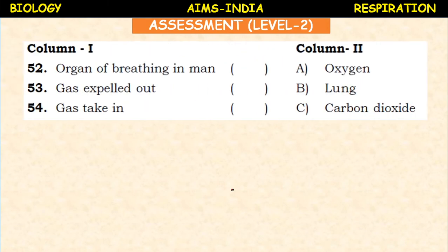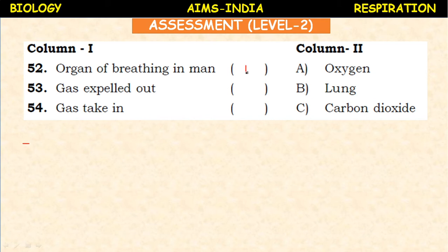Another small matching set: the organ of breathing in humans, the gas expelled out, and the gas taken in — oxygen, carbon dioxide, and lungs are given. The organ of respiration in humans is the lungs. During expiration we expel carbon dioxide. We breathe in oxygen-rich air.